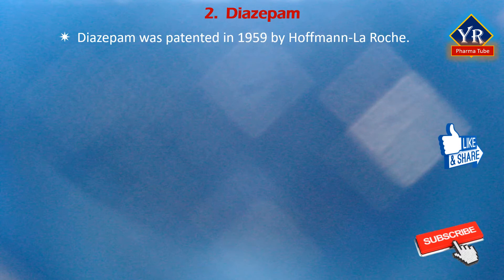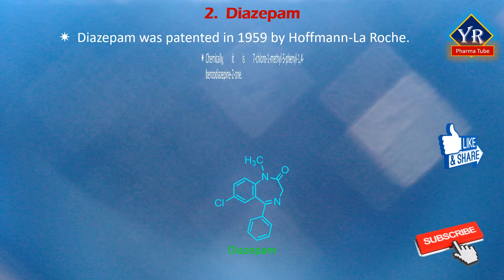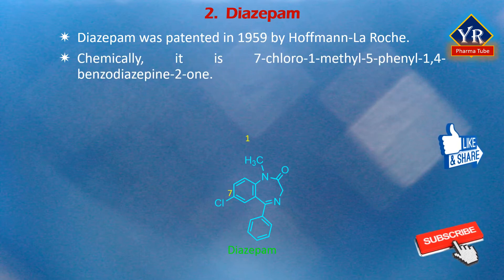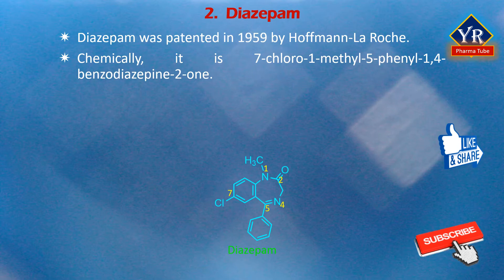The next drug is Diazepam. Diazepam was patented in 1959 by Hoffman-La Roche. It is a benzodiazepine derivative with anxiolytic, sedative, hypnotic and anticonvulsant properties. It is chemically 7-chloro-1-methyl-5-phenyl-1,4-benzodiazepine-2-one. It is a 1,4-benzodiazepine that is 1,3-dihydro-1,4-benzodiazepine-2-one substituted by a chloro group at position 7, a methyl group at position 1 and a phenyl group at position 5. It is an organochlorine compound.